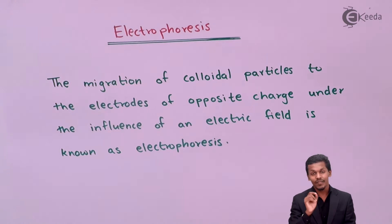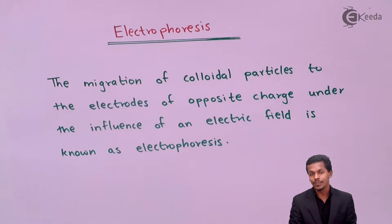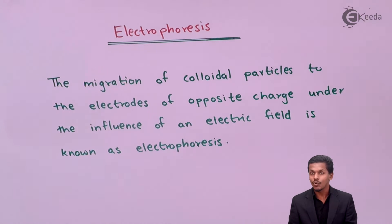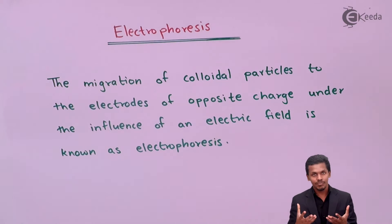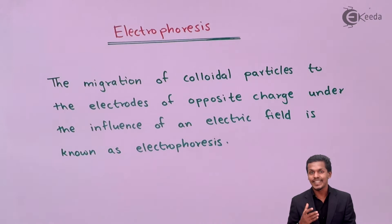Suppose the colloidal particle — especially the dispersed phase — is positive; it will move towards the electrode of opposite charge, that is, the negative electrode. If the dispersed phase is negative, it will move towards the positive charged electrode. This migration of charged colloidal particles towards their oppositely charged electrode is known as electrophoresis, which occurs in the presence of an electric field.